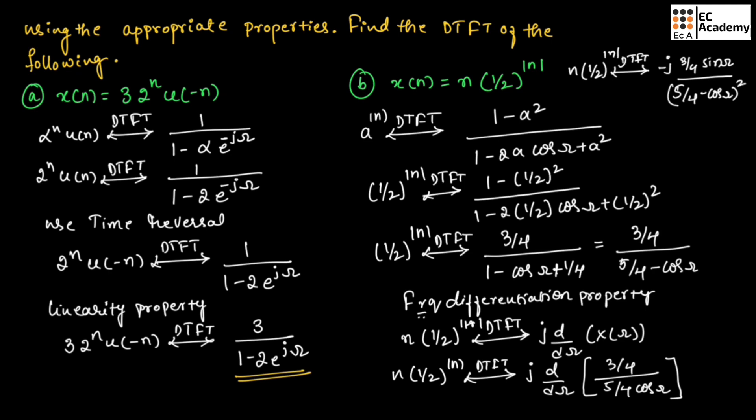So, this is the DTFT of the given sequence. This is about the problems on DTFT using properties of DTFT. I hope you have understood the topic. Thank you.